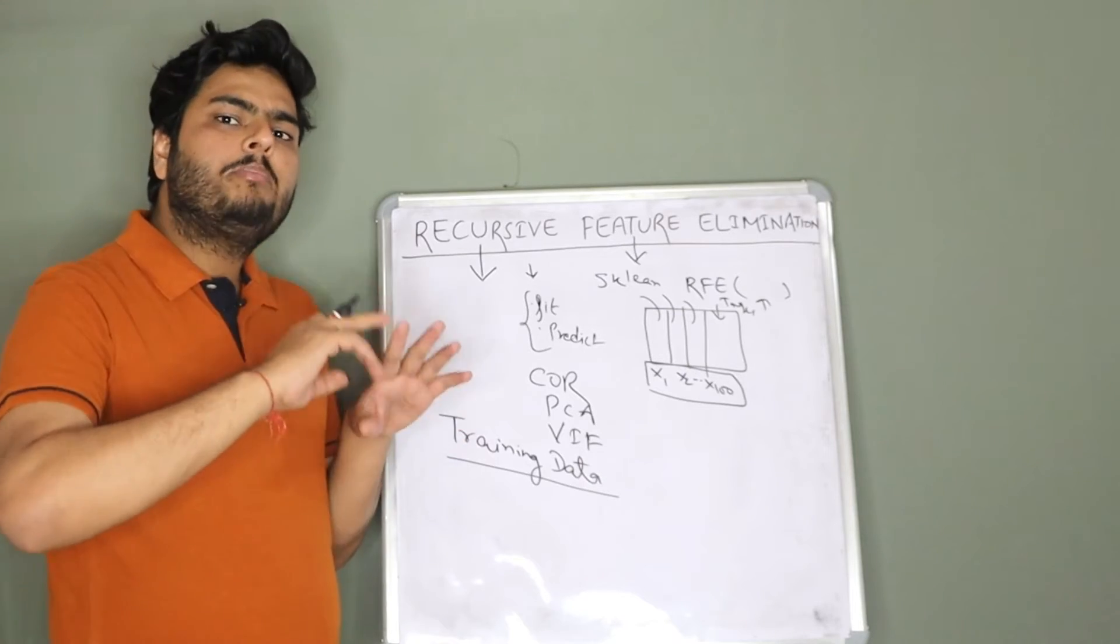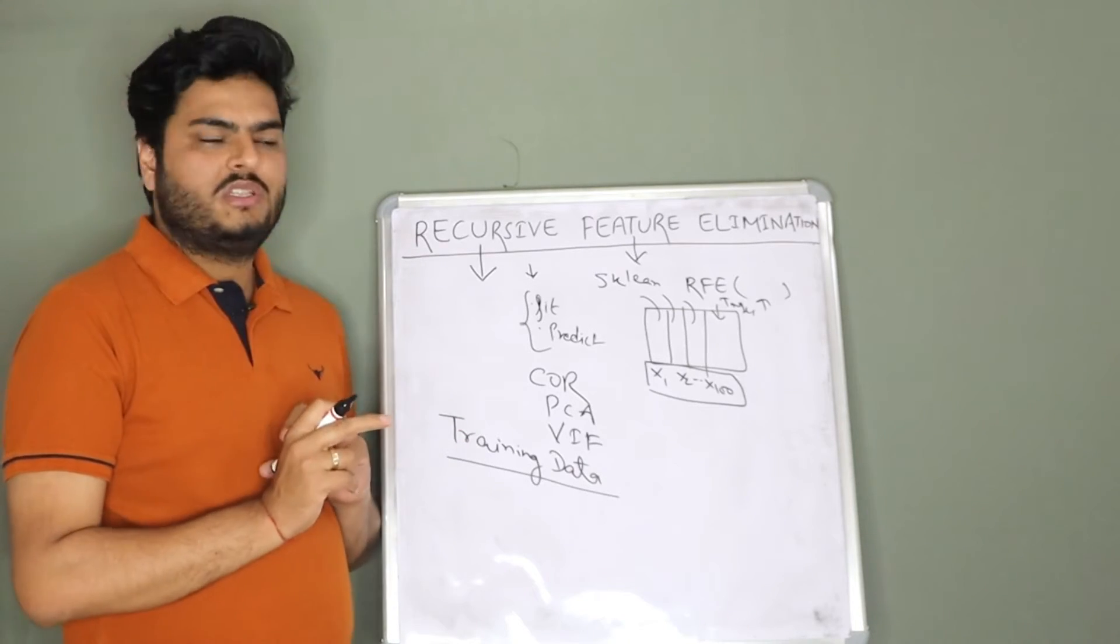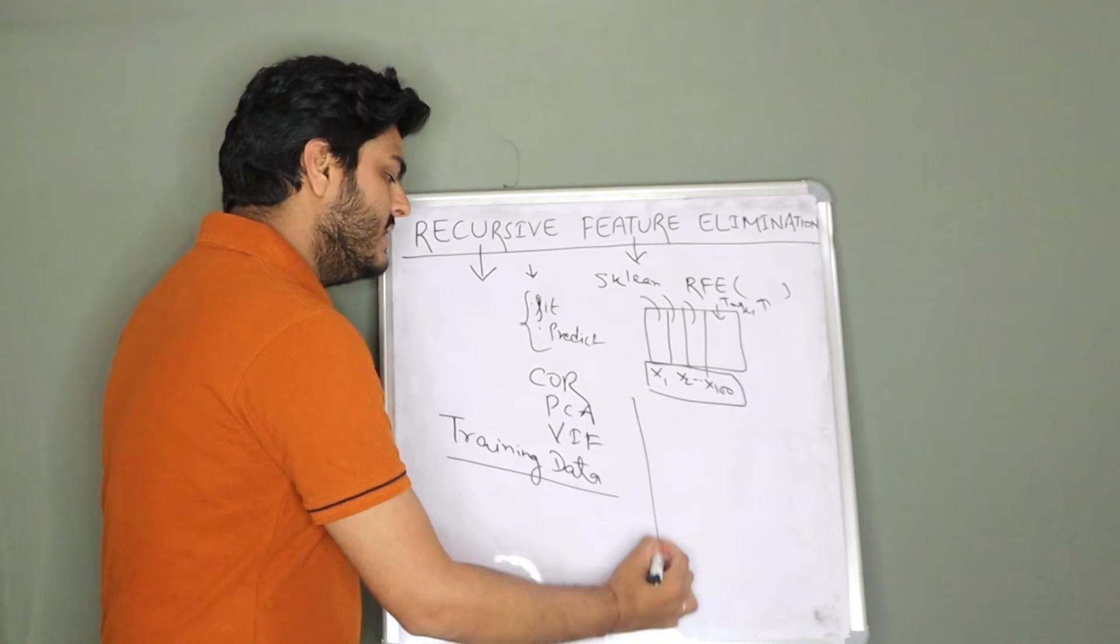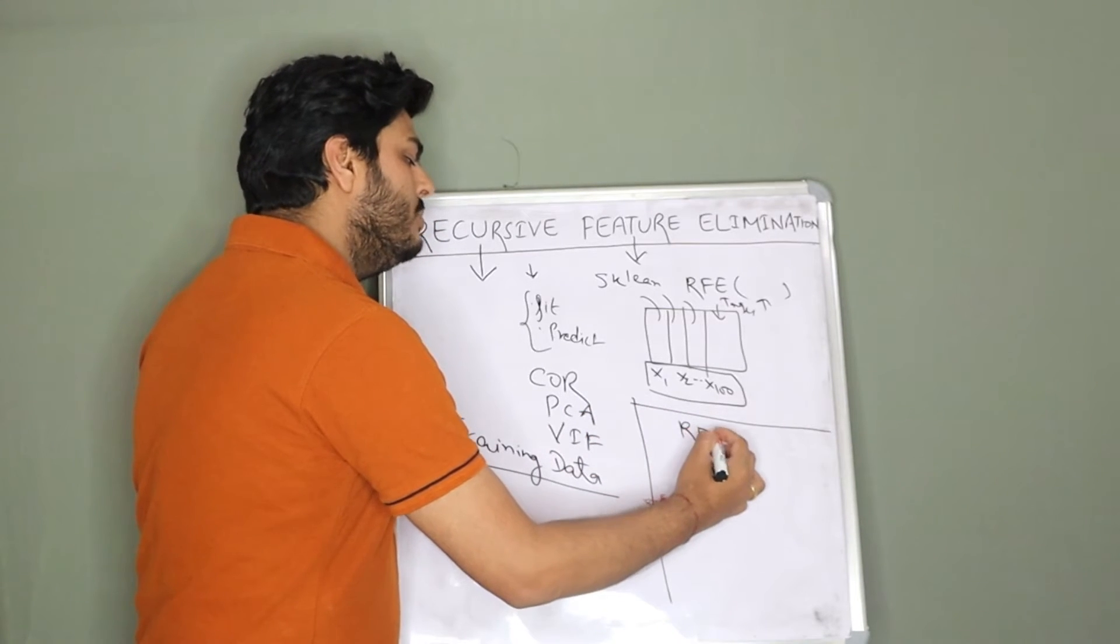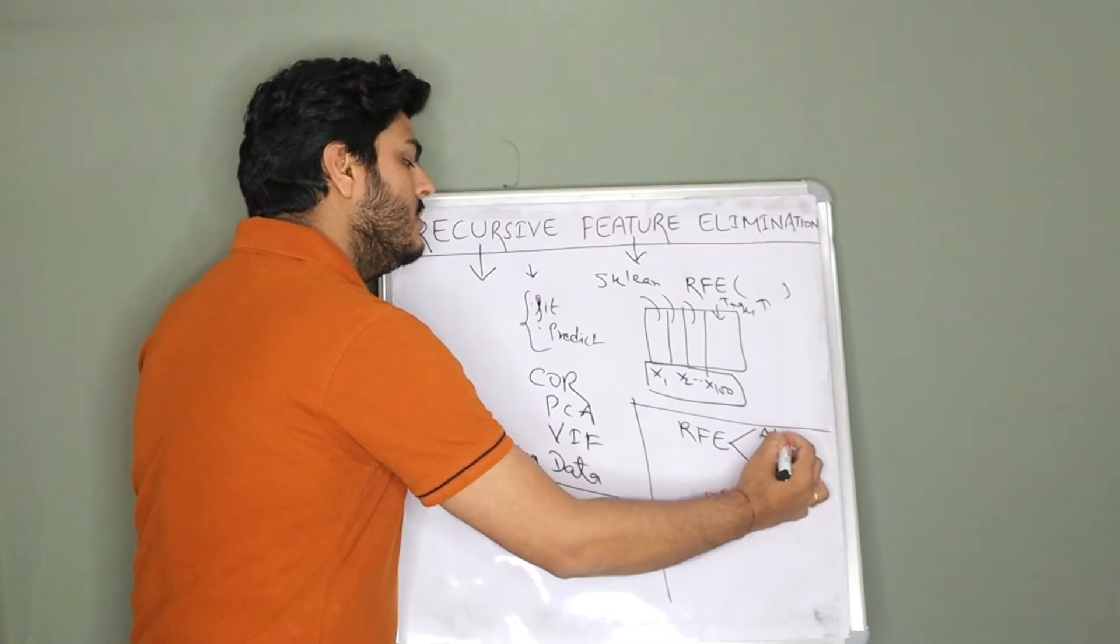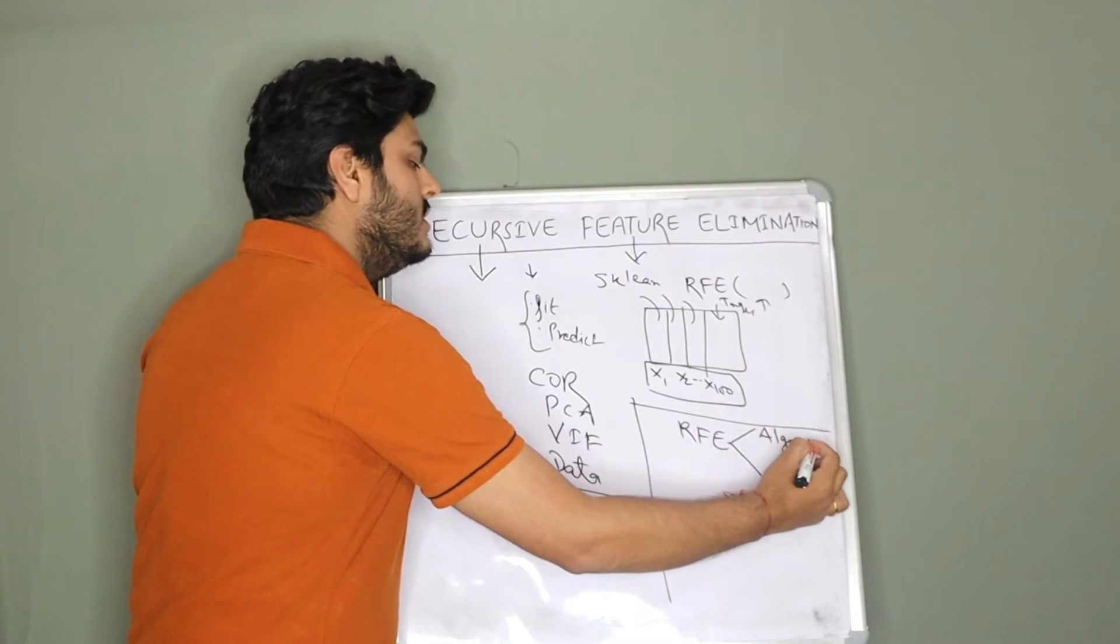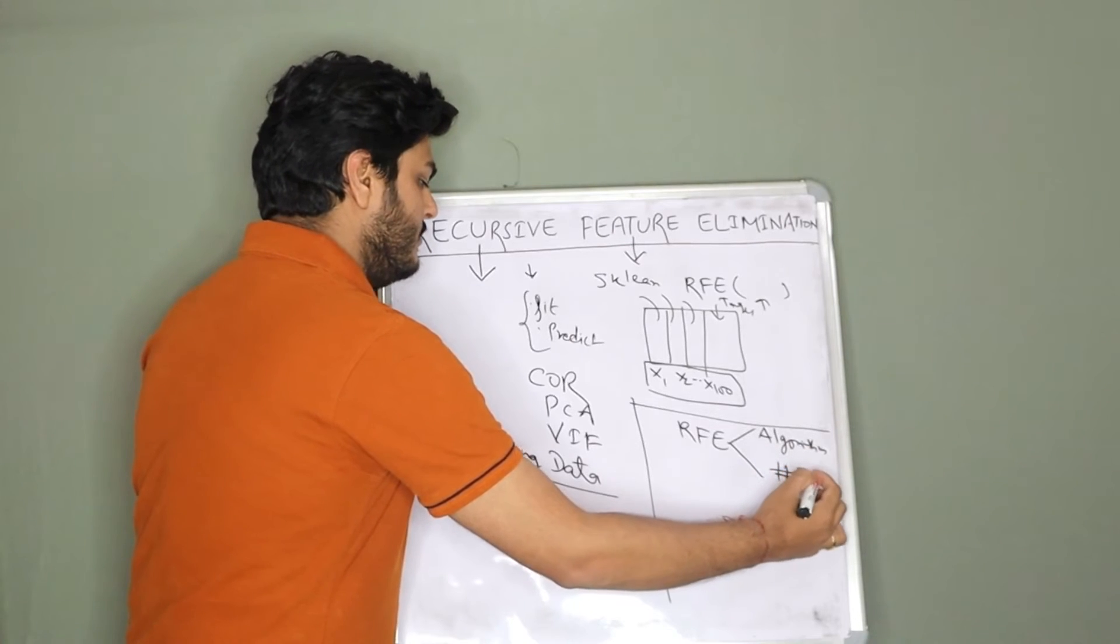This recursive feature elimination if you call in sklearn or in general also, it is nothing but a wrapper. What that wrapper does is it will take two arguments. I will just write here RFE, two main arguments of RFE. One is algorithm, and another is number of features.